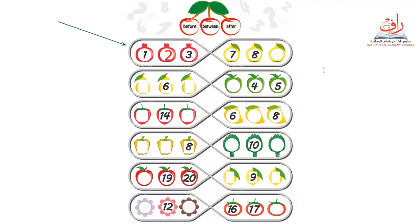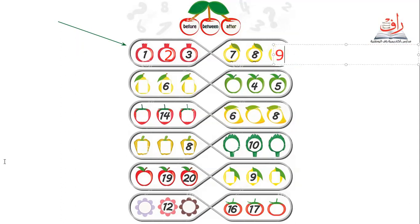Let's go to see the lemon — number two. Here we go. We have number seven, eight. And the number after number eight — what is it? Nine. Well done, excellent!